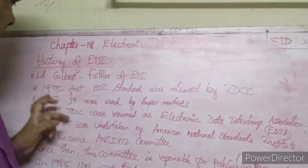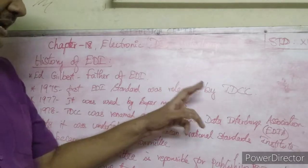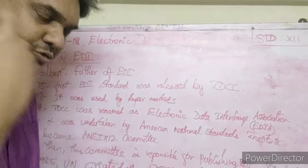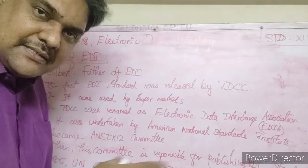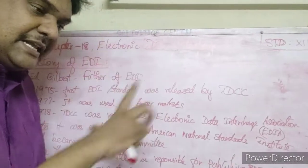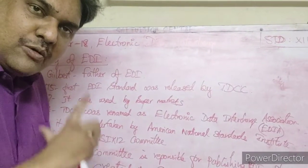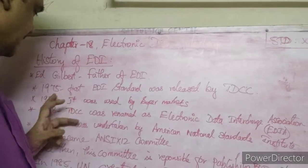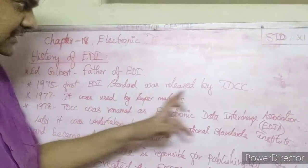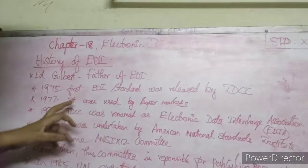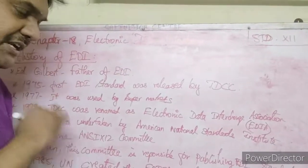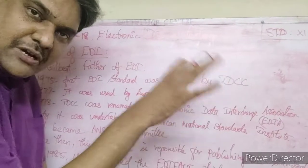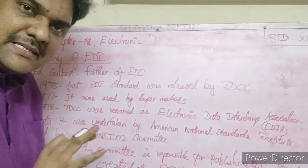In 1975, the first EDI standard was released by TDCC — an organization. Messages that had previously been sent through phones, telex, or fax could now be sent in a globally accepted, standard format.